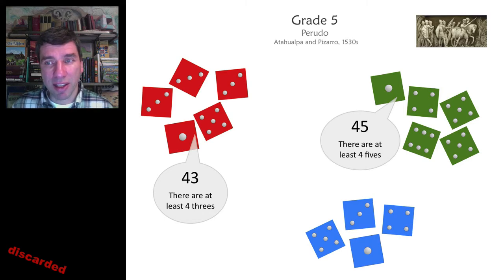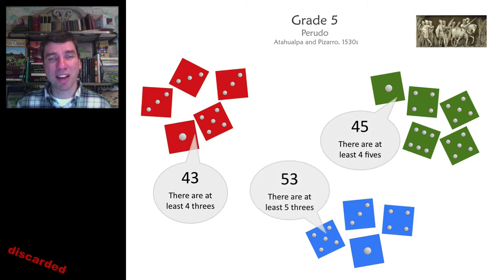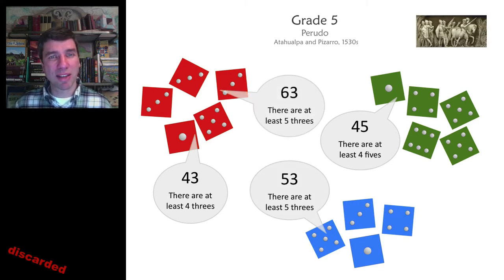And blue is going to play a clever game here. He's going to say that there are at least five threes. He's using the fact that red bid pretty high to begin with. So he's guessing that red is going to not be too excited about calling bluff on five threes. And indeed, red decides to keep on going with six threes.